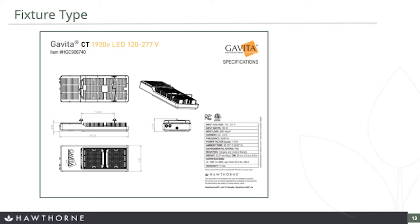Now, what light fixture do you want to use? Let's say you pick a Gavita CT 1930. What we want to know is the total PPF rating for the light — the total amount of photons the fixture emits per second. For Gavita, we make this easy: the fixture name is the PPF rating. The Gavita 1930E is 1930 micromoles per second; the Gavita 1700E is 1700 micromoles per second. If you're used to HPS 1000-watt double-ended fixtures, the PPF usually ranges around 1800 to 1900. For other companies, just find their spec sheet.